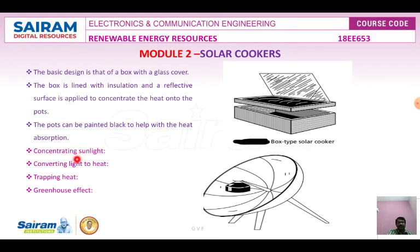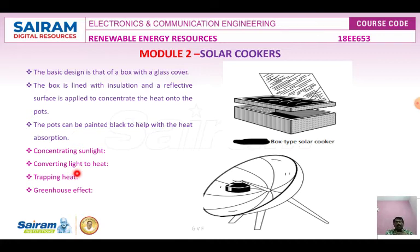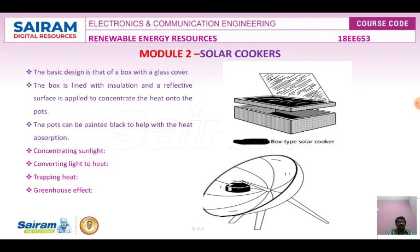The second principle is converting light to heat — the reflective surface inside the food container converts light energy falling on the cooker into heat energy. The third principle is trapping heat, which reduces convection by isolating the air inside the cooker from outside air. A tightly sealed plastic bag or glass cover maintains similar temperatures even on cold or windy days. The greenhouse effect also helps — glass transmits visible light but blocks infrared thermal radiation from escaping, amplifying the heating effect. Aluminium foil is also used along with glass for more effective solar cooking.